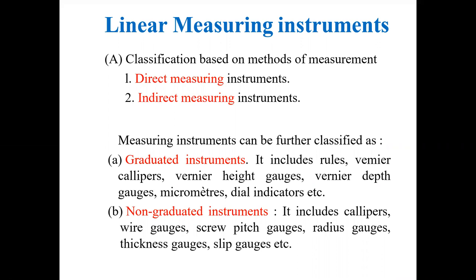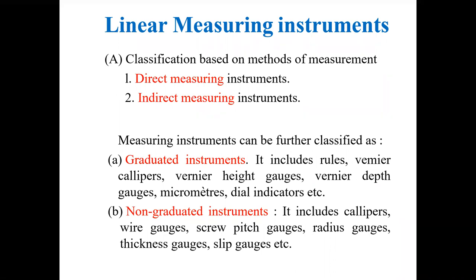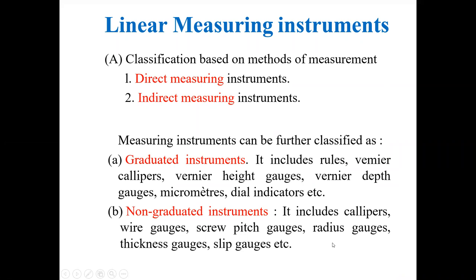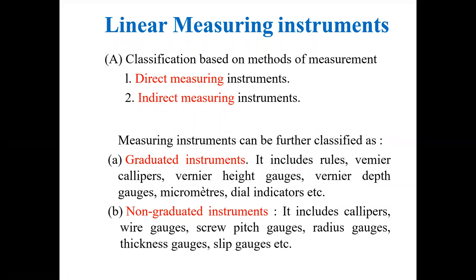Direct measuring instruments are further classified as graduated instruments and non-graduated instruments. If the instruments have engraved lines or markings, those are called graduated instruments. If there are no engraved lines, those are non-graduated instruments. Examples of graduated instruments: rules, vernier calipers, vernier height gauge, vernier depth gauge, micrometers, dial indicators. Examples of non-graduated instruments: calipers (not vernier calipers, simply calipers), wire gauges, screw pitch gauges, radius gauges, thickness gauges, clip gauges.